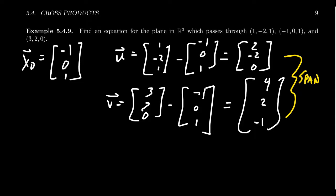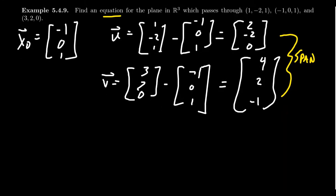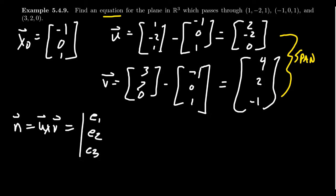To find an equation for the plane, we need a scalar equation — we need the normal vector. We could do what we did in the previous example, or we could use cross products or determinants to find that normal vector. Our normal vector n is going to be u cross v. The cross product is orthogonal to both vectors, and we calculate it as the determinant with rows [e1, e2, e3], [2, -2, 0], [4, 2, -1].